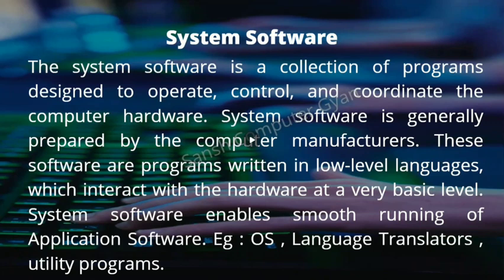System software enables smooth running of application software. It runs the computer system — without it, our computer system will not run. The operating system is the most important program. It acts as an interface between the user and the hardware. Think of it like a road: the road is our system software, and the vehicles running on it represent application software.